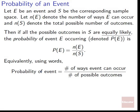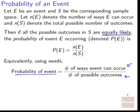The probability of an event: let E be an event and S be the corresponding sample space. Let N(E) denote the number of ways E can occur, and N(S) denote the total possible number of outcomes. Then, if all the possible outcomes in S are equally likely, the probability of event E occurring — denoted P(E) — is P(E) = N(E) divided by N(S). Equivalently, the probability of an event equals the number of ways the event can occur divided by the number of possible outcomes.